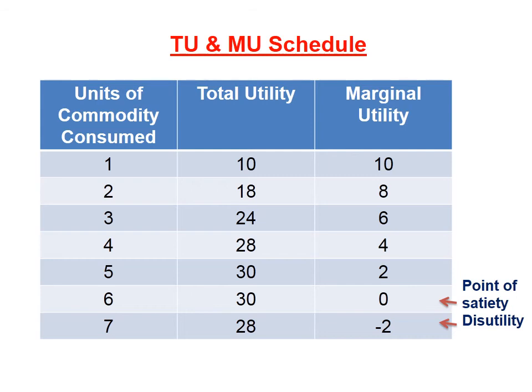After the point of satiety, when the consumer consumes the seventh unit, TU goes on falling at a diminishing rate and MU becomes negative — that is, −2. This is known as disutility or dissatisfaction of the consumer. These are the observations of the TU and MU schedule.